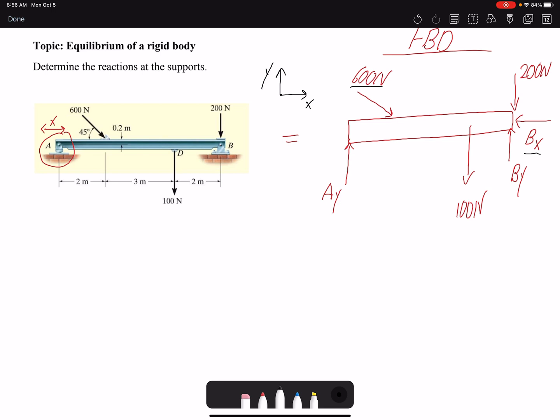The dimensions are two meters here, three meters here, and then the end is two meters. For this beam we are not neglecting the thickness, so we're assuming a thickness. From the top to the middle is 0.2 meters. That means the x component of this force is also going to create a moment because we have a moment arm now.